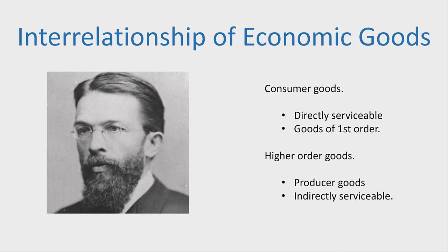The production structure is rooted in Carl Menger's exposition of the interrelationships of economic goods. He talks about consumer goods — the goods of the lowest order. They are goods that are directly serviceable; they provide satisfaction directly. You don't need to do anything to them. A bottle of water: you can just drink it and it refreshes you. That is direct serviceability. That's the good of the first order.